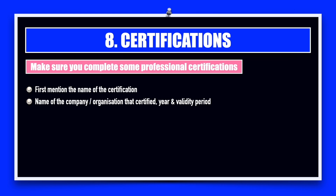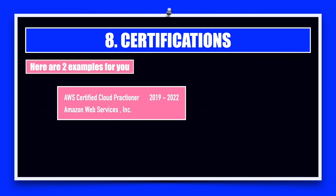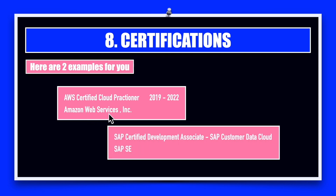For example, you can get your Java certification from Sun, and if you want, you can highlight some of the learning modules, though this is optional as most certifications are standard and well-known. Here are two examples: the first is the AWS Certified Cloud Practitioner — note that the validity period is mentioned next to it, and this certificate is provided by Amazon Web Services.